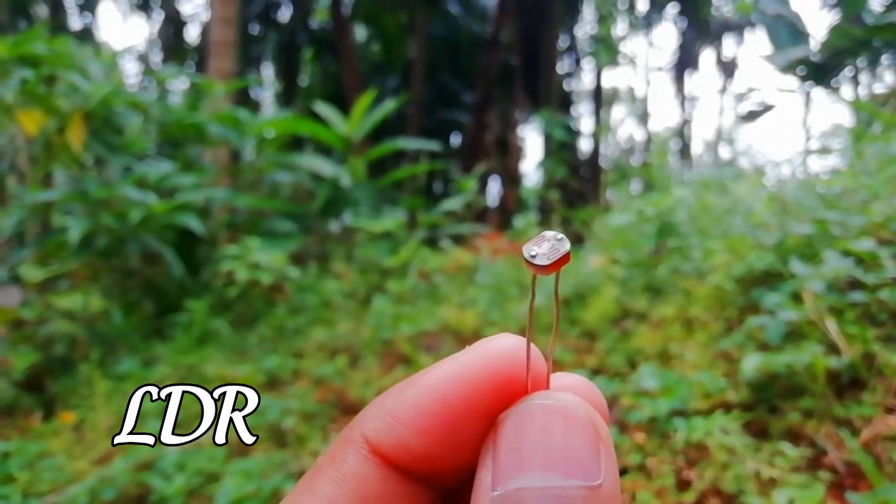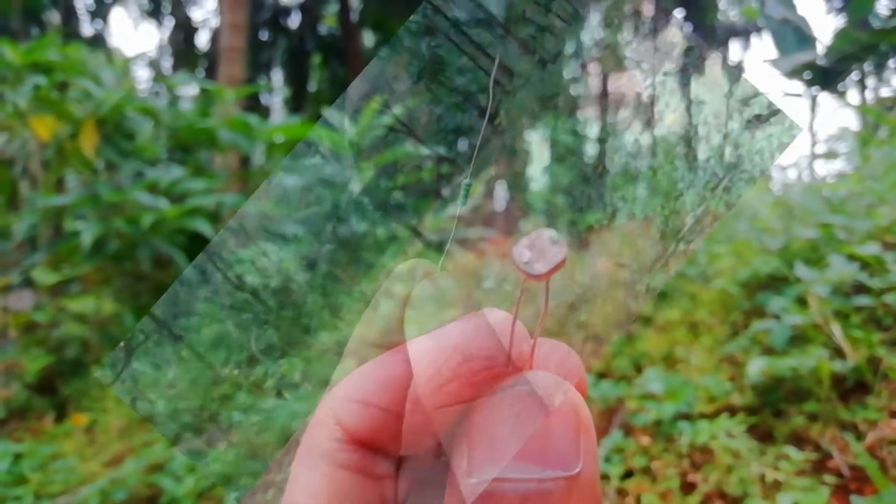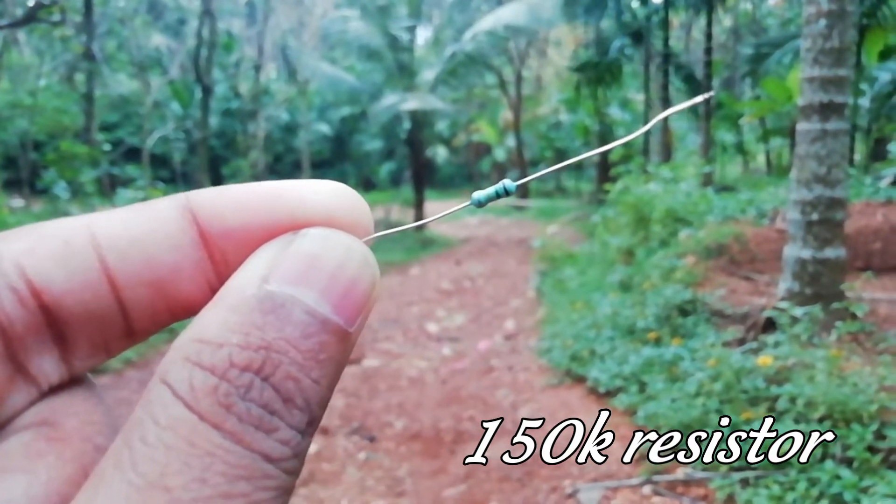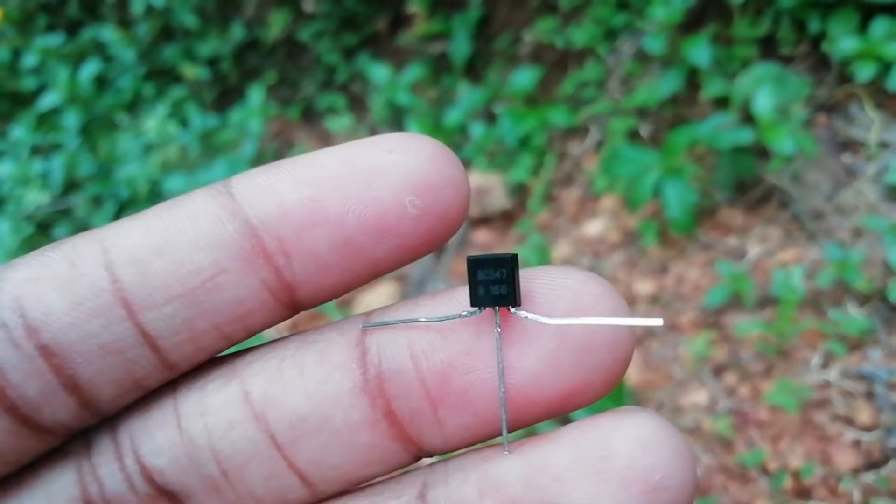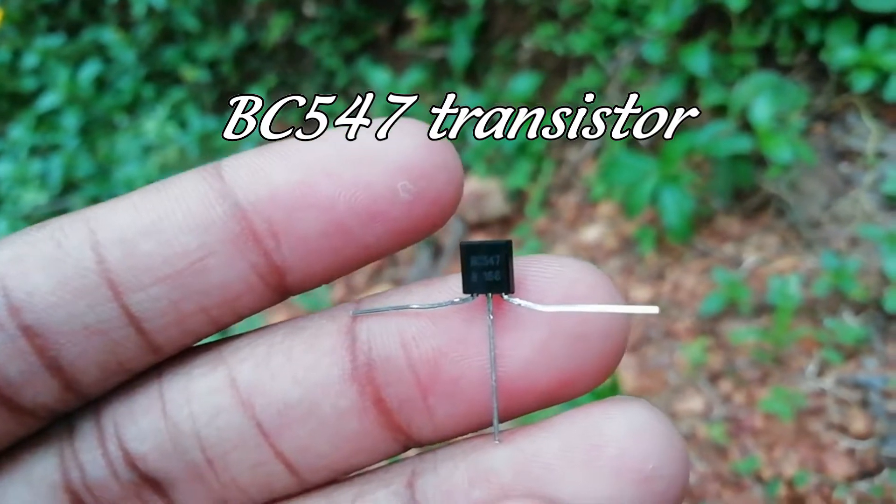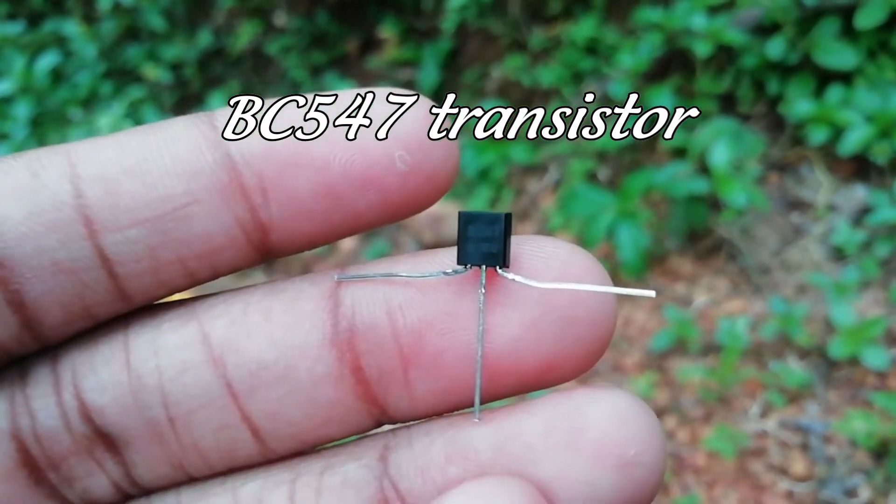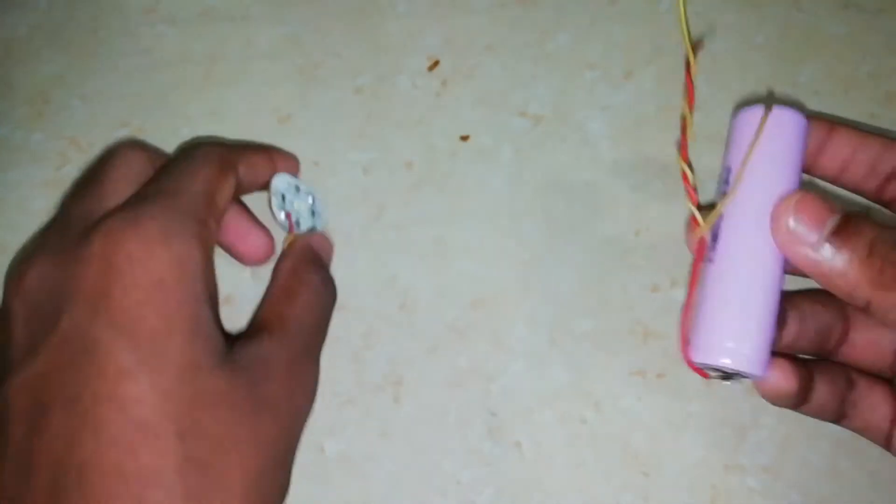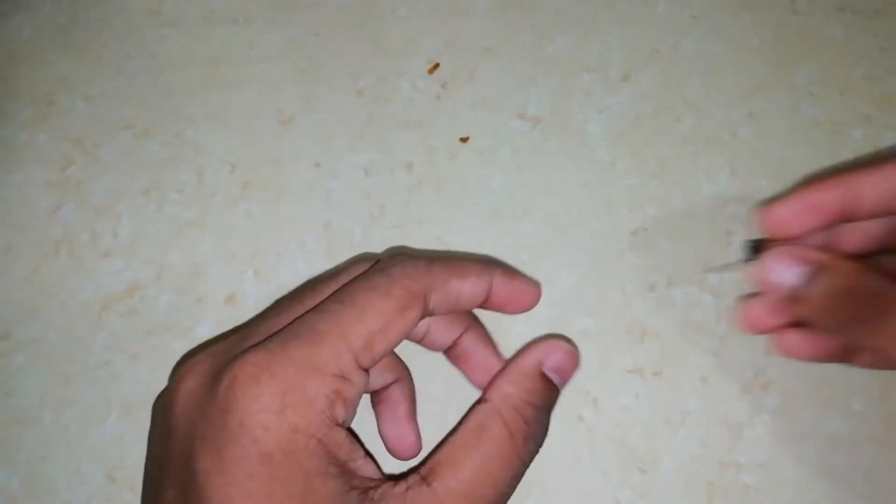It has a 150K resistor, a BC574 transistor, a 3W LED bulb, a 3V battery, and 12V.